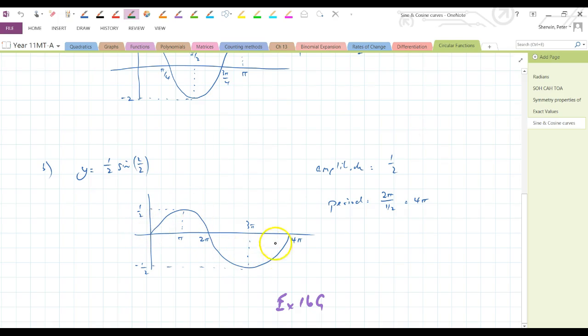Go down to y equals 1 half sine x over 2. So this is my sine curve here. 1 half tells me that I'm only going up to 1 half on my amplitude, and down to minus 1 half here. And x over 2 tells me that 2 pi over 1 half, or 4 pi, is my period. So in one complete cycle,